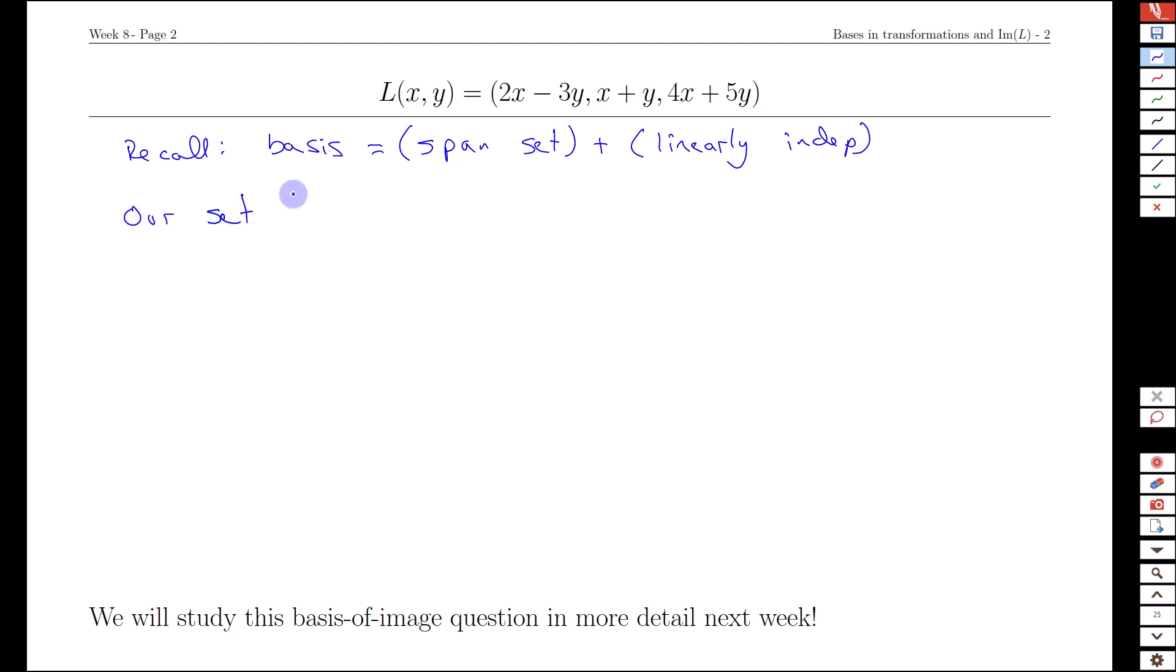In this particular case, our set {[2, 1, 4], [-3, 1, 5]} contains two non-multiple vectors, and that means the set is linearly independent.